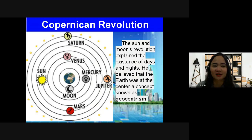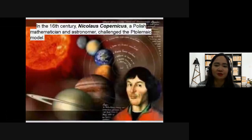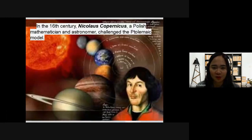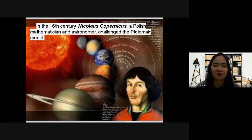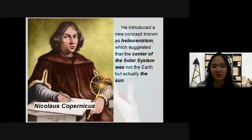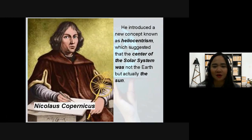This theory was challenged by Nicholas Copernicus. In the 16th century, Nicholas Copernicus — a Polish mathematician and astronomer — challenged the Ptolemaic model, the previous geocentric theory. He developed a new theory known as the heliocentric model, or heliocentrism, which suggests that the center of the solar system is not the Earth but rather the Sun.